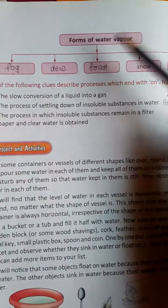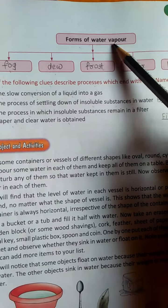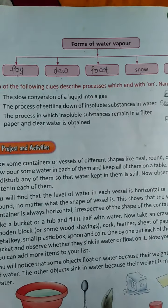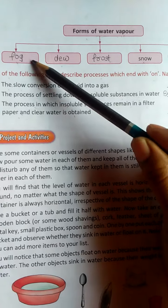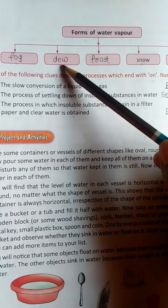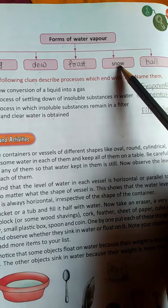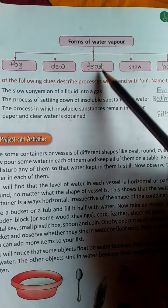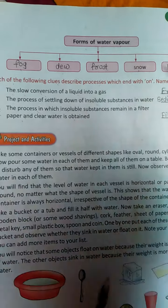The second wave chart is about forms of water vapor. There are five forms of water vapor: fog, dew, frost, snow and hail. You have to revise the spelling of these words again and again.